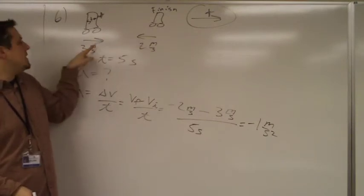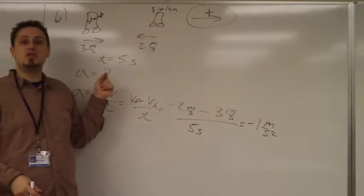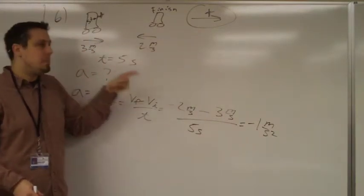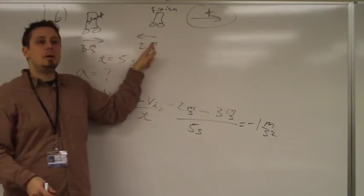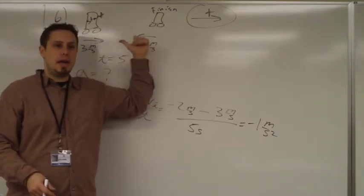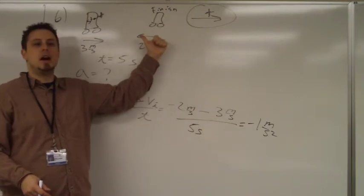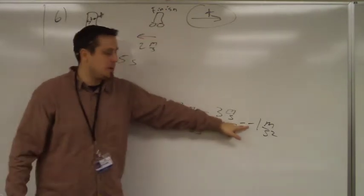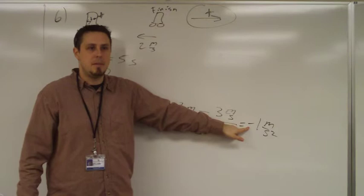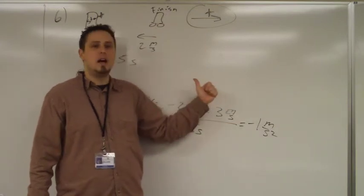If the acceleration was to the right, this object would keep going faster and faster to the right. But not only did it slow down, it also started to go the other way. So the acceleration had to point to the left. Did the answer come out that way? Yep. Came out with a negative, meaning the acceleration is to the left.